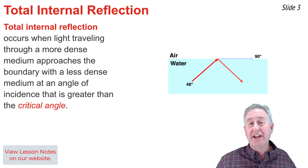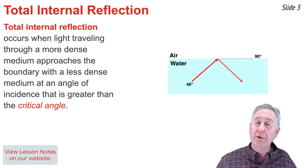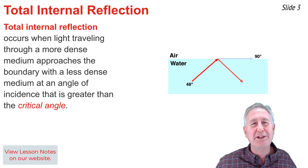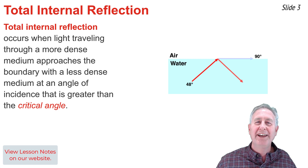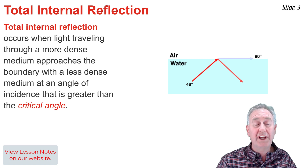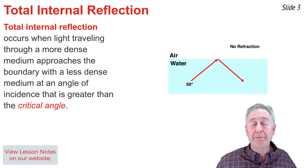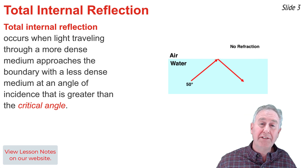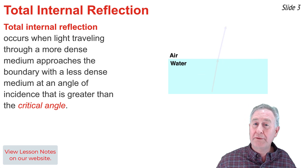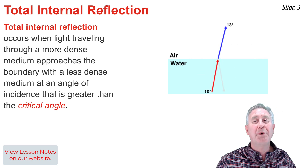To understand the concept of a critical angle, let's study the repeating animation above. Light is traveling from water into air, and because it's traveling from more dense to less dense, it's refracting away from the normal line.